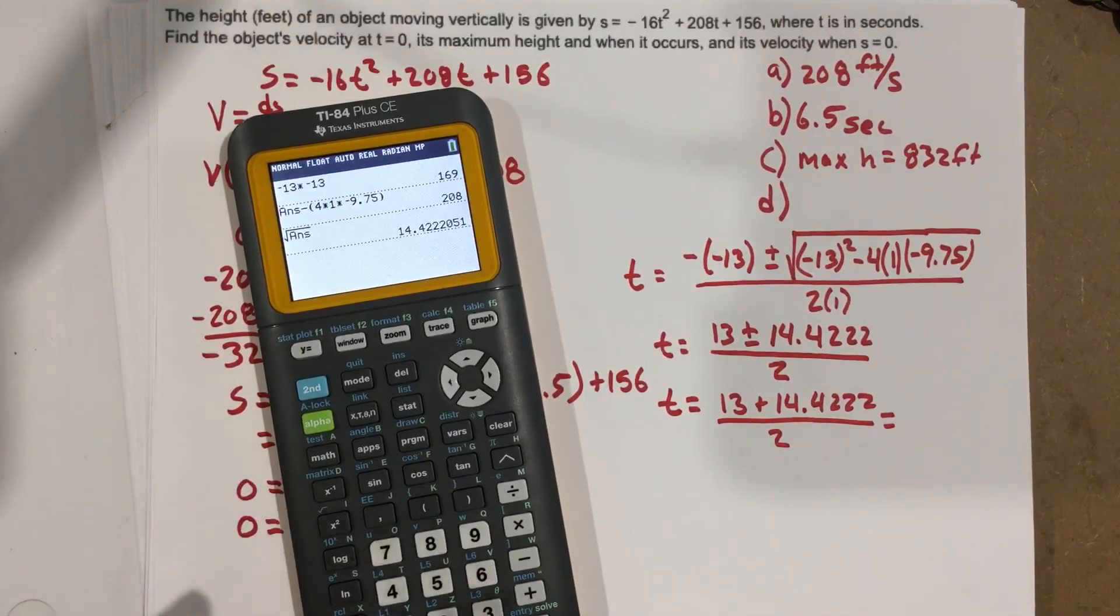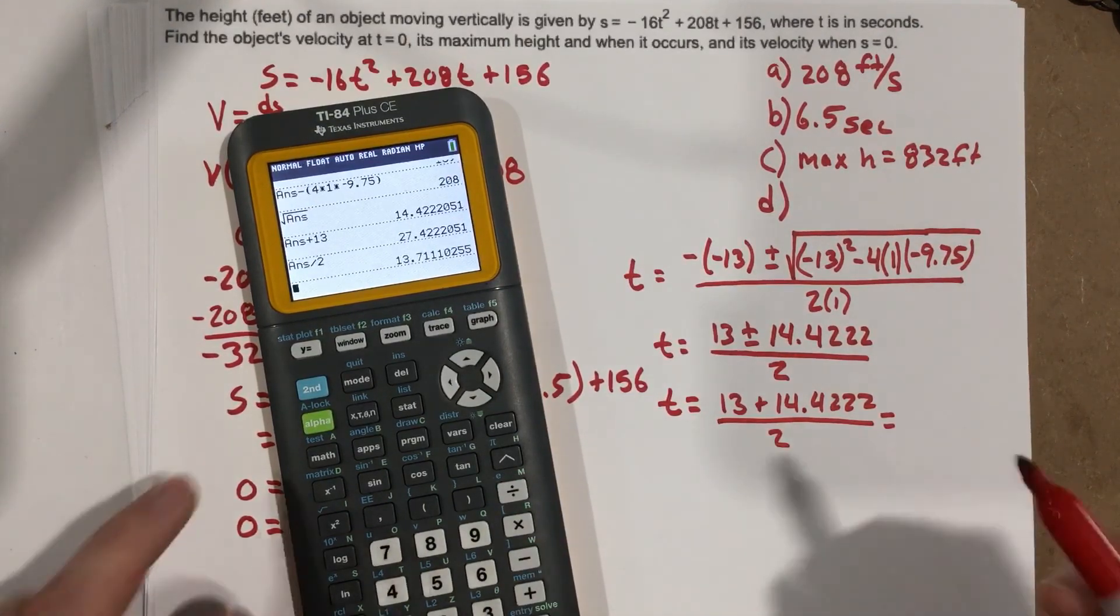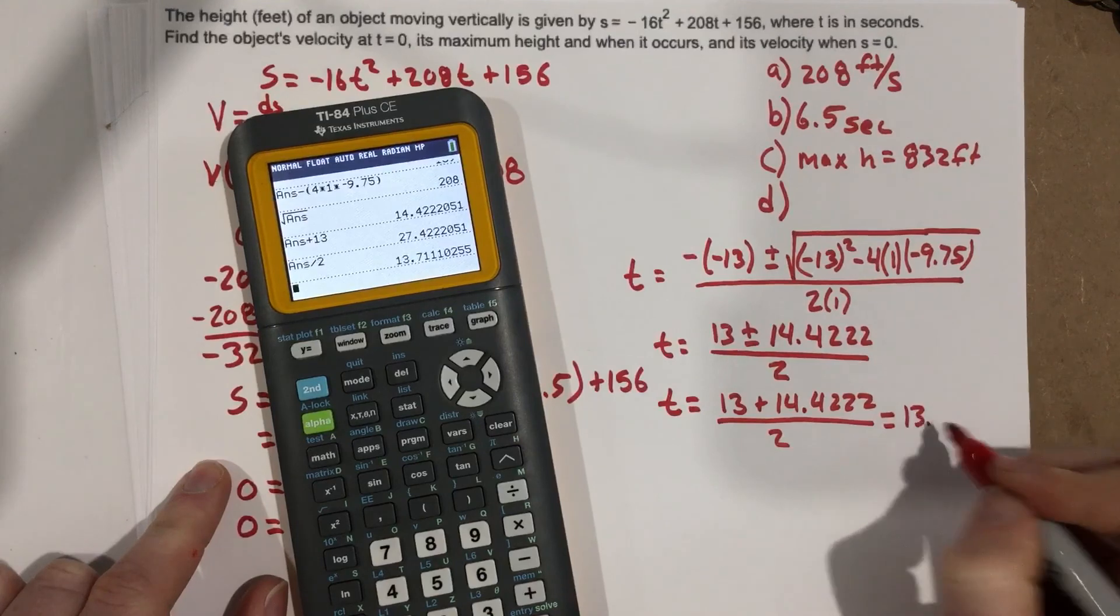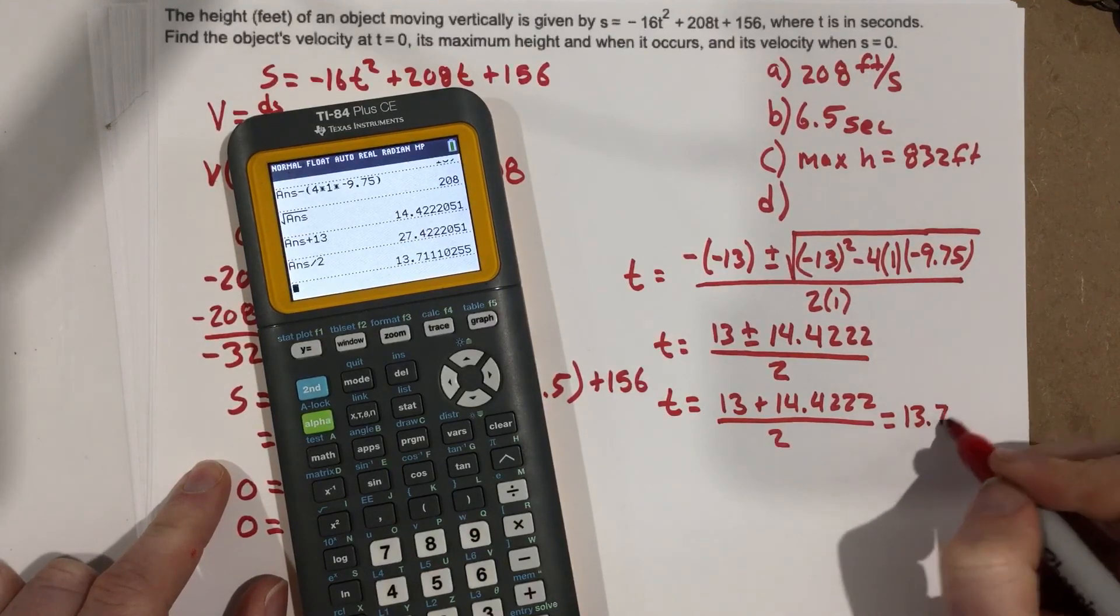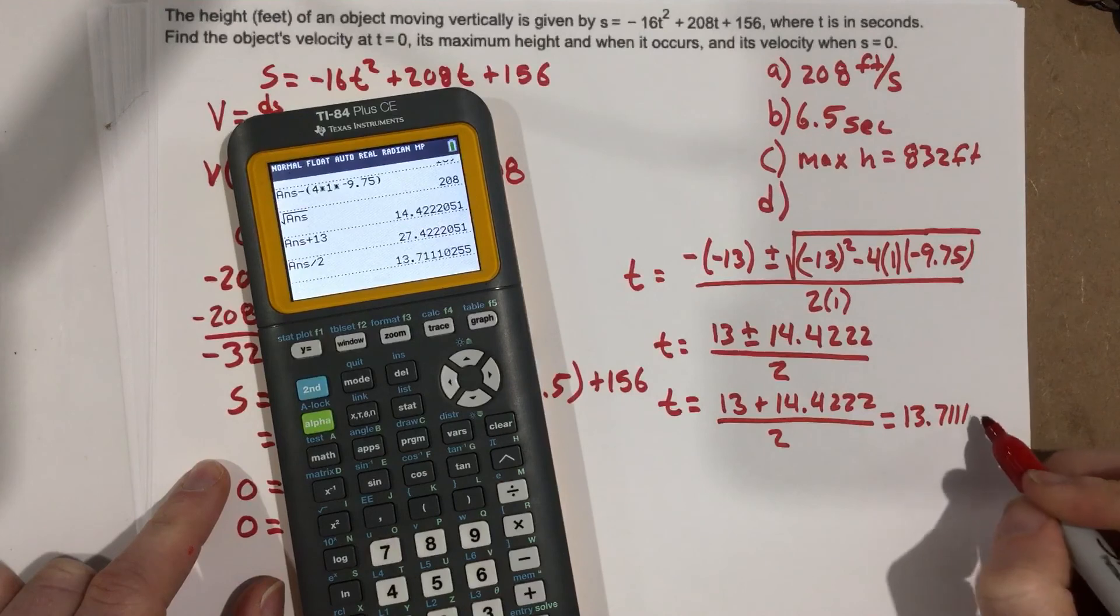So I'm going to do 13 plus 14.4222 divided by 2. And that time is, so plus 13 divided by 2. 13 point, and I'm going to use a few decimals here, 7111. And that's seconds.